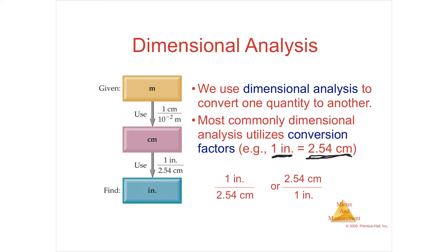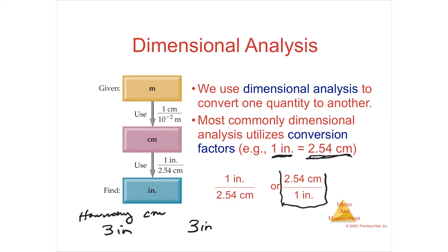For example: how many centimeters are in three inches? You start with what you're given — three inches. You want to use a conversion factor, which is a fraction, and it can go in either direction. Both of these are equal conversion factors: one inch is 2.54 centimeters, or 2.54 centimeters is one inch — that dividing line means they're equal to each other.